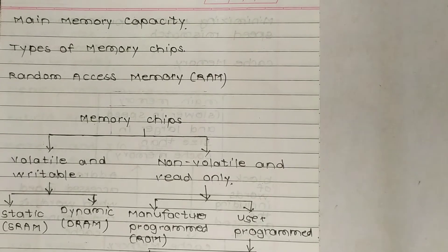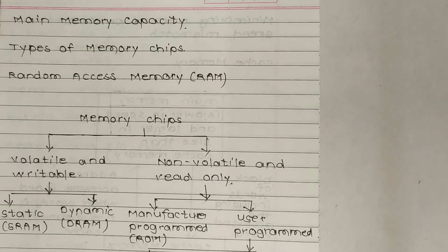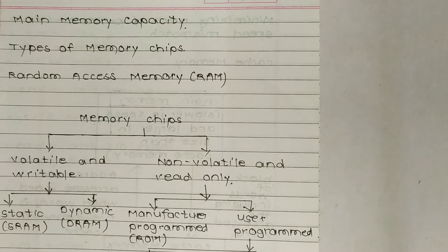Main memory capacity of a computer is defined as the number of bytes that can be stored in its main memory. It is normally stated in terms of kilobytes (KB), which is equal to 1024, that is 2 raised to 10 bytes of storage, or megabytes (MB), which is equal to 2 raised to 20 bytes of storage.